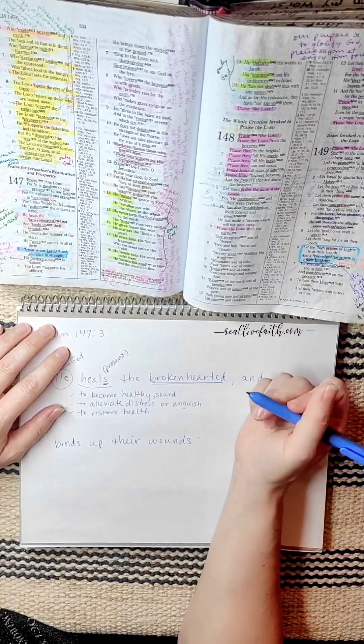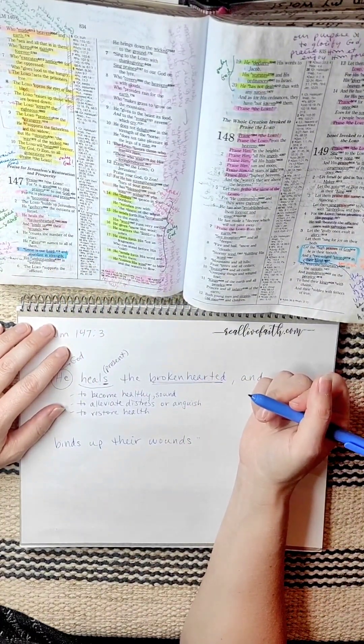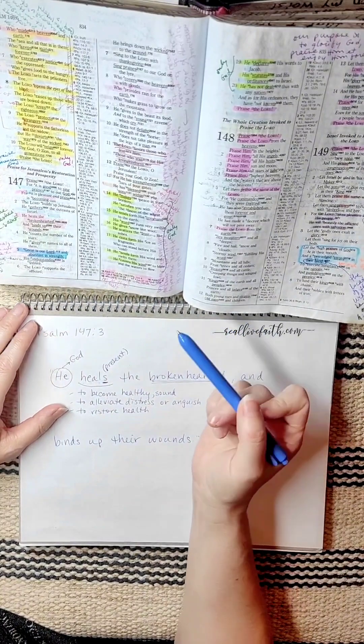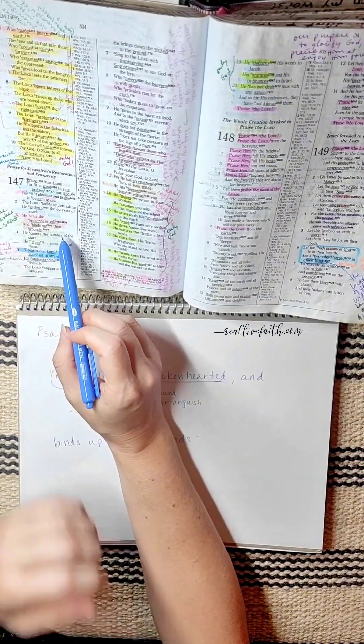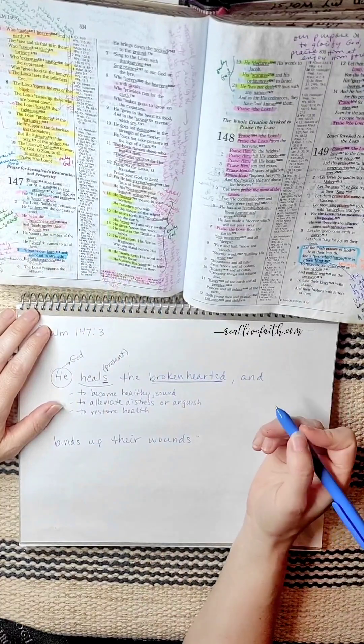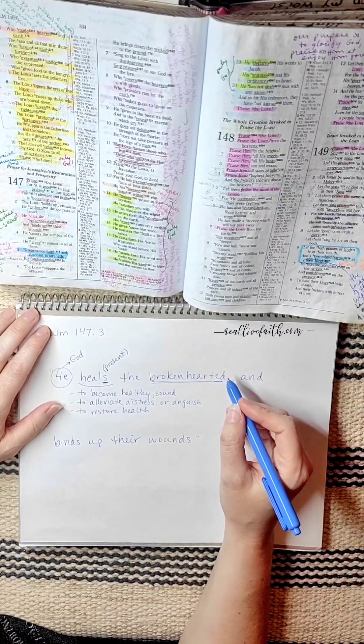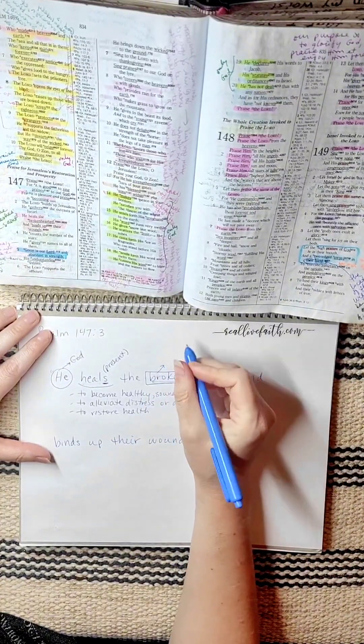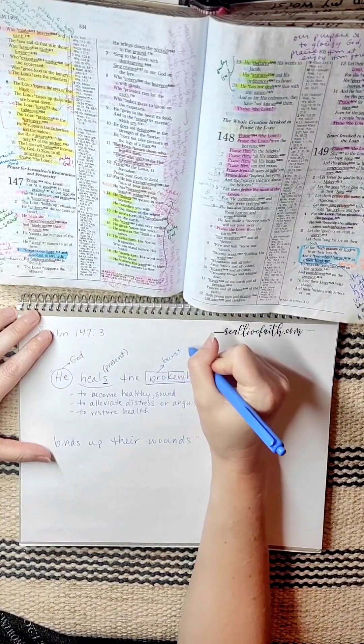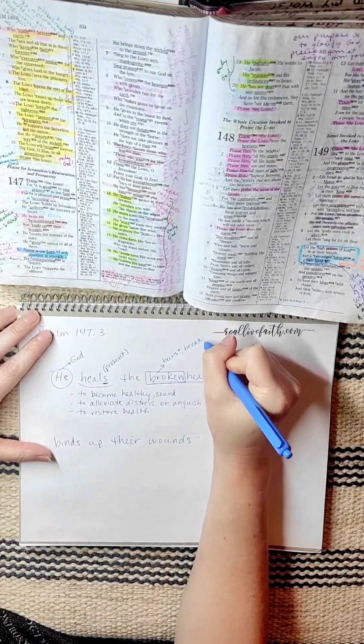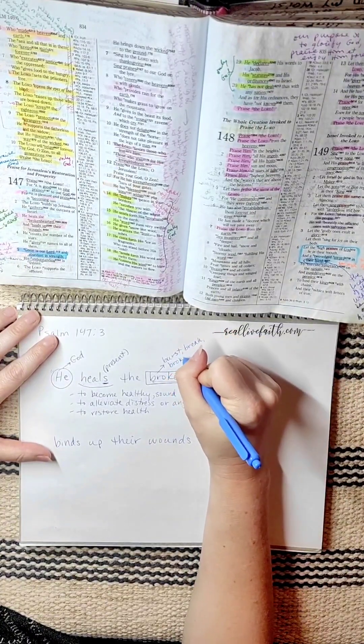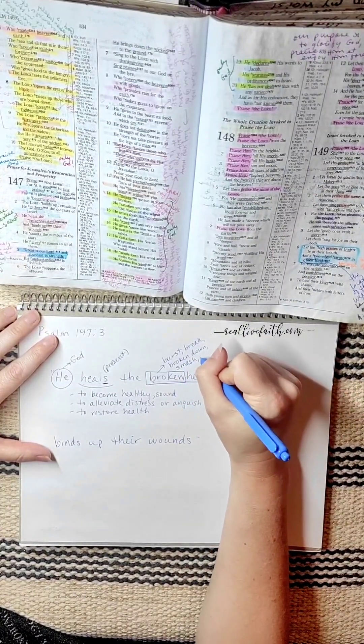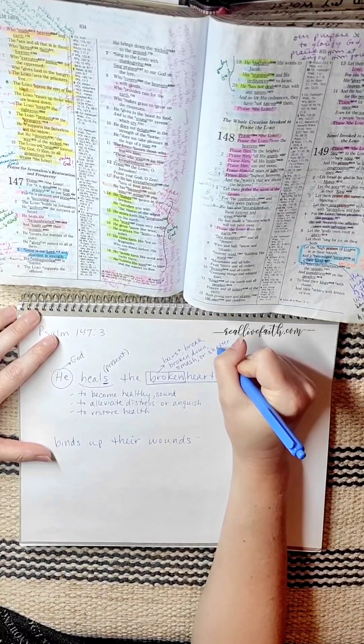For example, in my Bible, broken-hearted has two of Strong's references, 7665 and 3820. So if I go to the back of my Bible, I can go to the Old Testament and look up each of these Strong's references. And it shows what one of them applies to broken, one of them applies to the heart. You can also find that if you get online. There's a really neat website and app called the Blue Letter Bible app. And they also have the Strong's reference. So you can probably find it in other Bible apps as well. But it's really good because it gives you that original meaning of the word. So if you do that, what you find is for broken, this word broken is going to imply burst, to burst, to break, broken down, to smash, or to shatter.